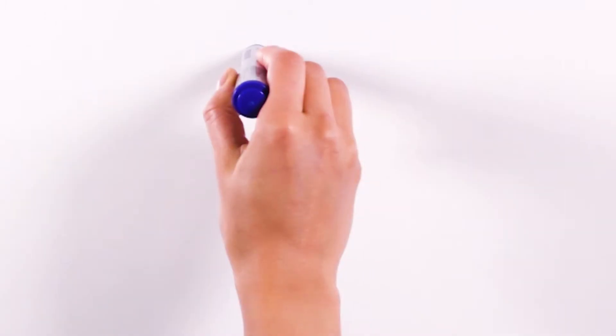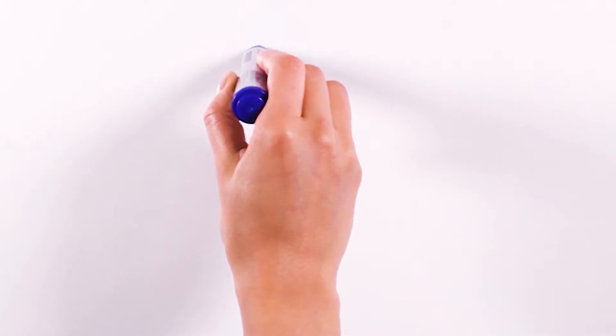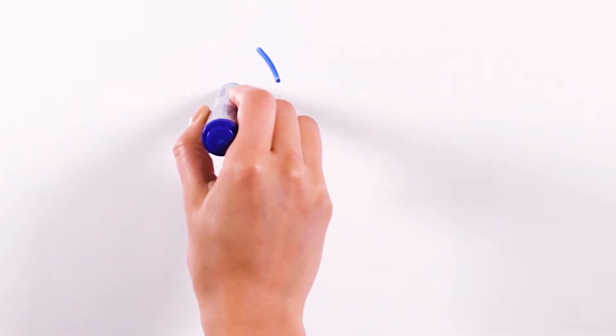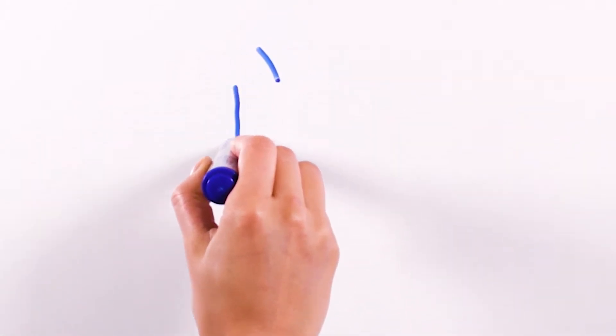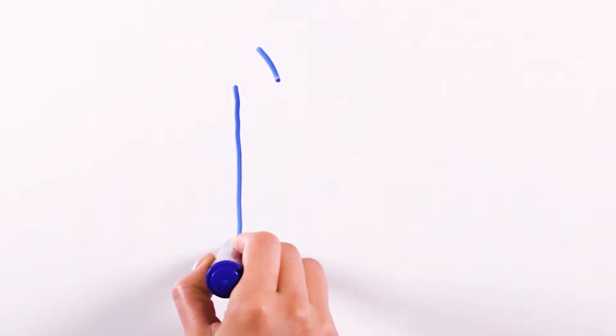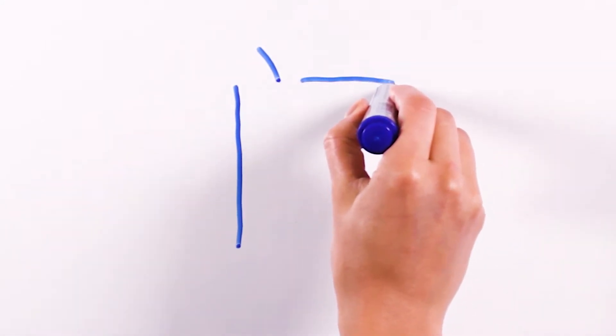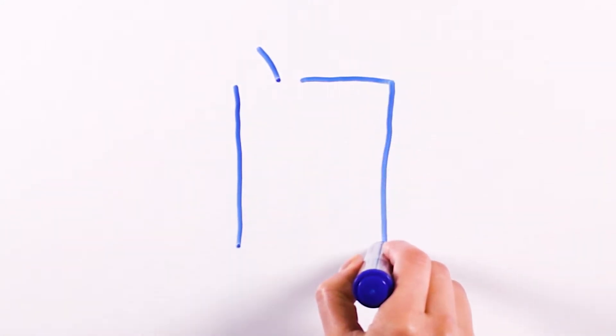Let's see how we draw it. We start from a dot, then stroke two, and stroke three.